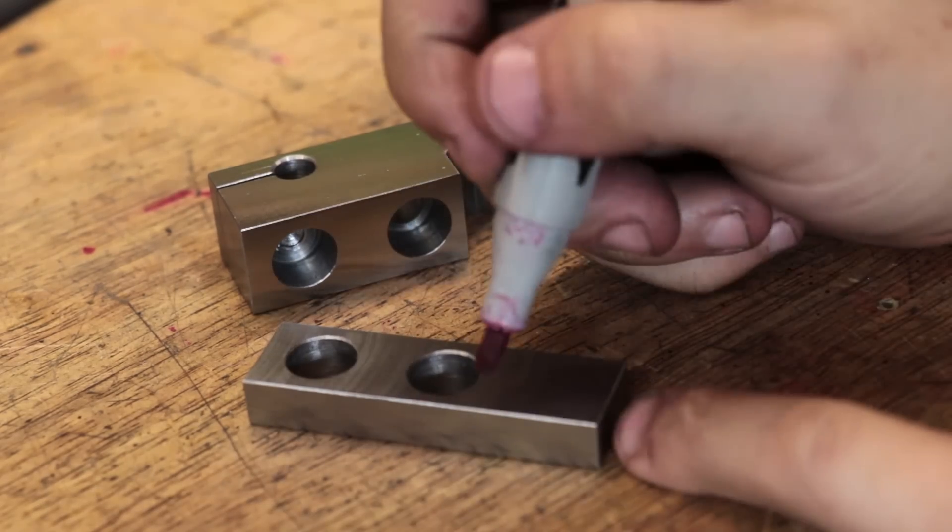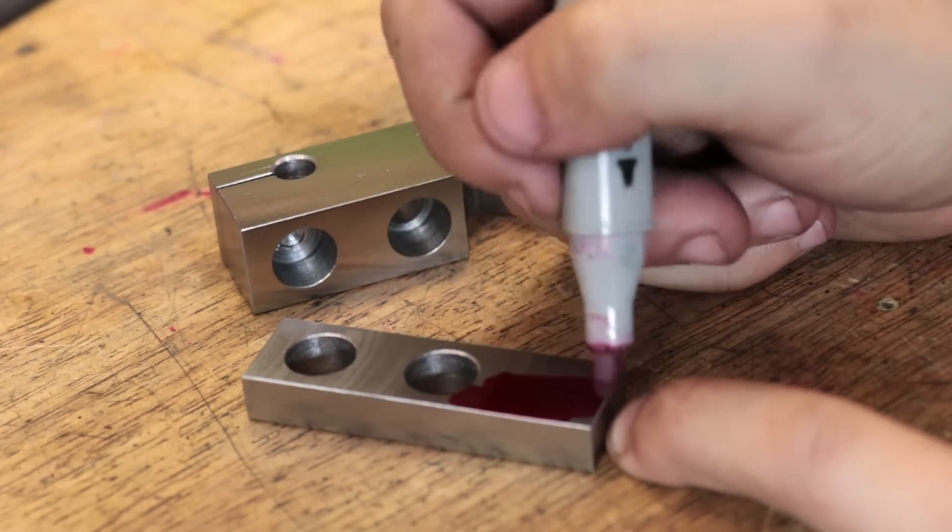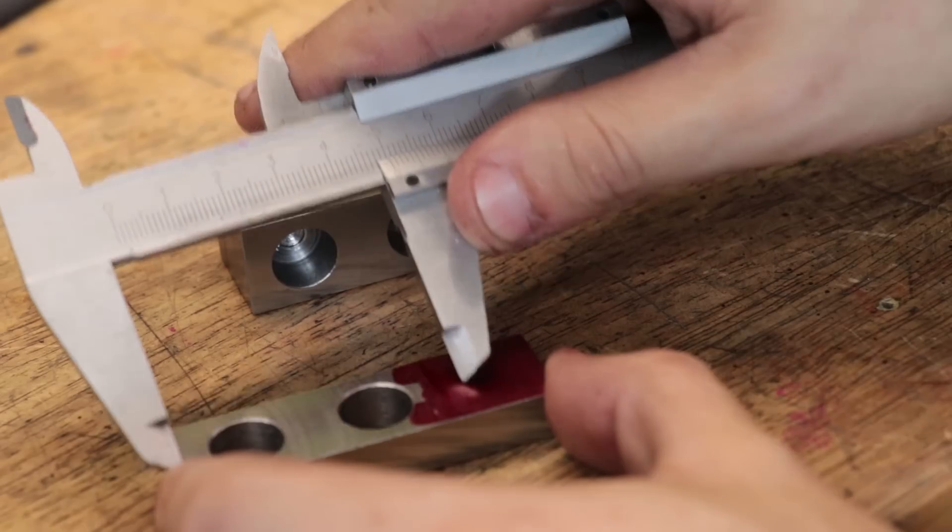With the top half done I can now finish the bottom. The first thing I need to do is cut the part to length.